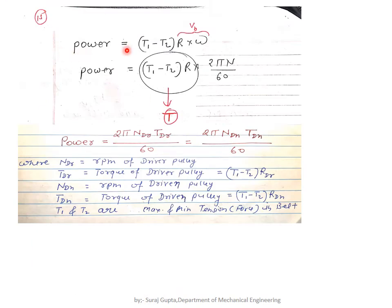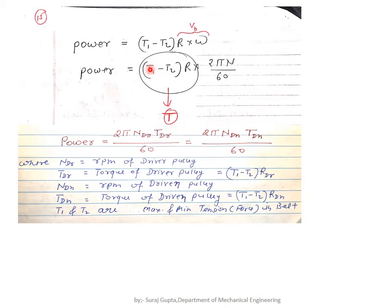The power formula is: P = (T₁ − T₂) × R × ω, where R·ω is the linear belt velocity and (T₁ − T₂) is the resultant force. We can also replace ω with 2πN/60, giving us the torque form. Be careful not to confuse T for torque with T for tension — different notations are used for each.